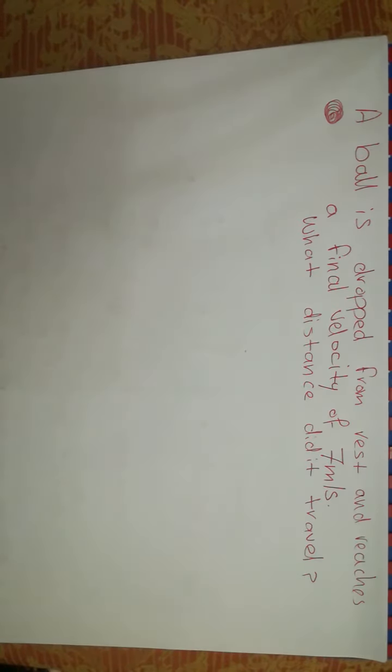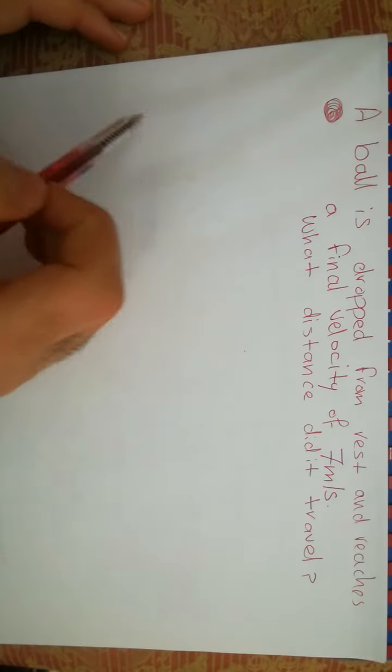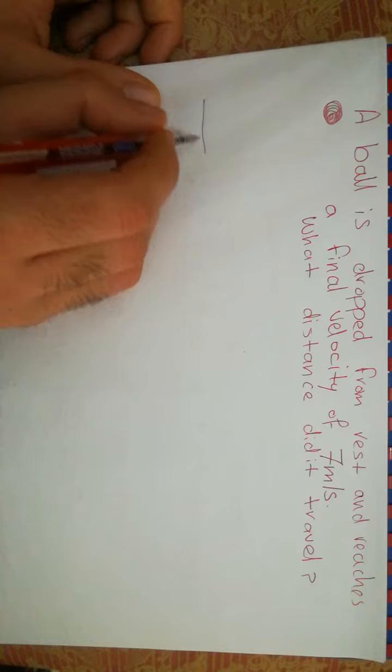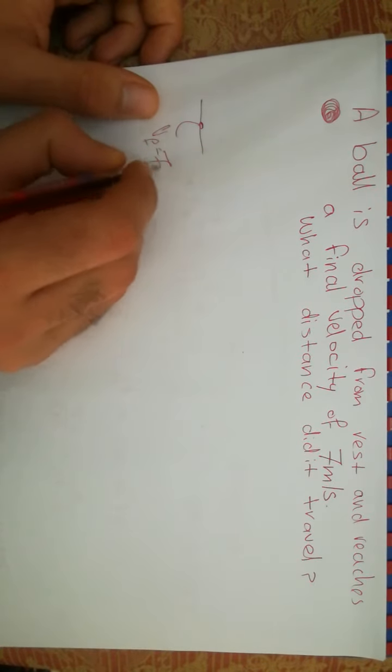So we have here a reenactment of a ball that is going to be dropped from a balcony, and it hits the ground. Its final velocity, 7 meters per second.